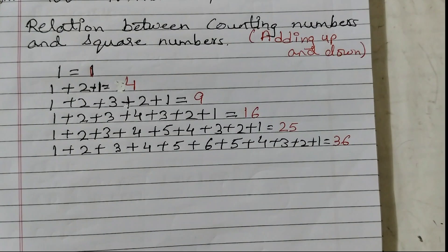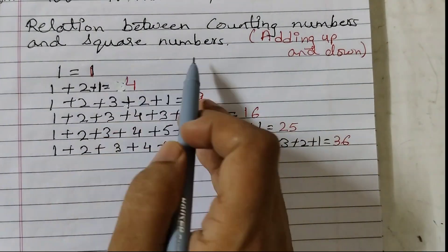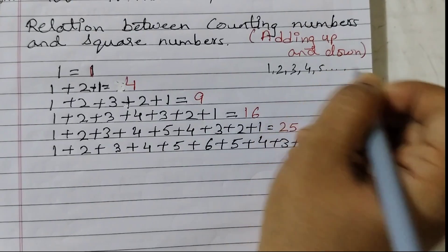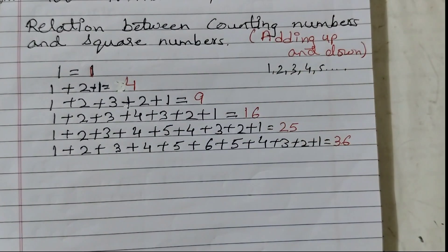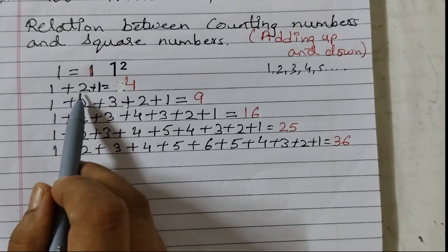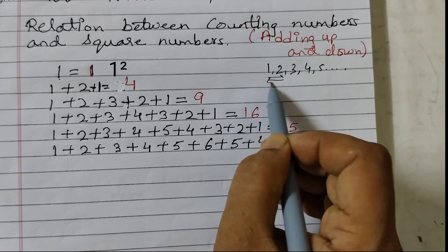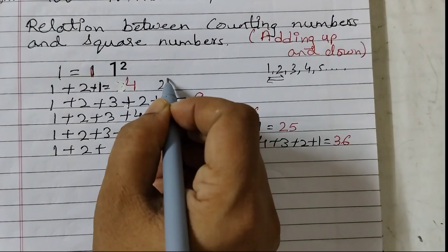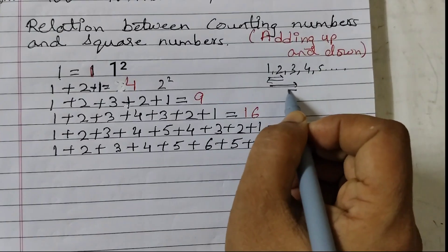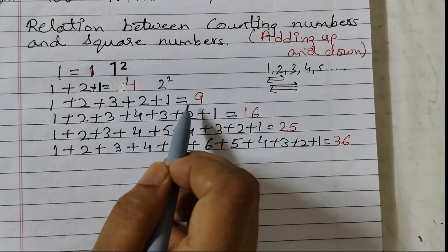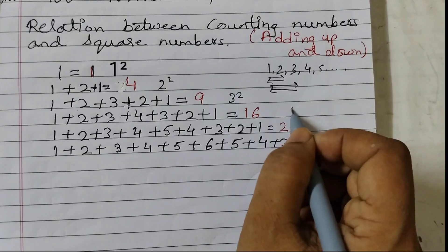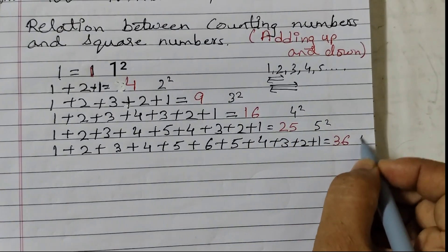Another example of a relation between sequences is given between counting numbers adding up and down and square numbers. The counting numbers are like 1, 2, 3, 4, 5 and so on. What is the relation between these numbers and square numbers? The first counting number: 1 is equal to 1. Adding up and down means 1 plus 2 and then come back — so 1 plus 2 plus 1 is 4, which is 2 squared. Then 1 plus 2 plus 3 — move till 3 and then backwards — so 1 plus 2 plus 3 plus 2 plus 1 is 9 which is 3 squared. Same way going till 4 and coming back gives 16 which is 4 squared. This is 5 squared. This is 6 squared.